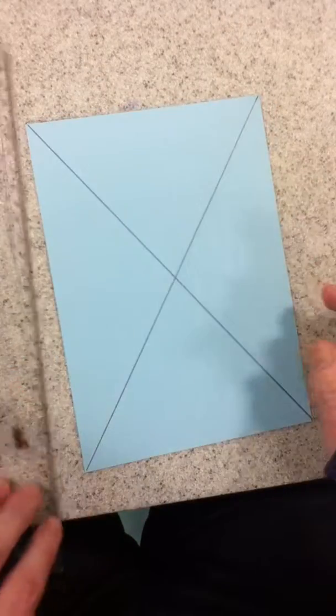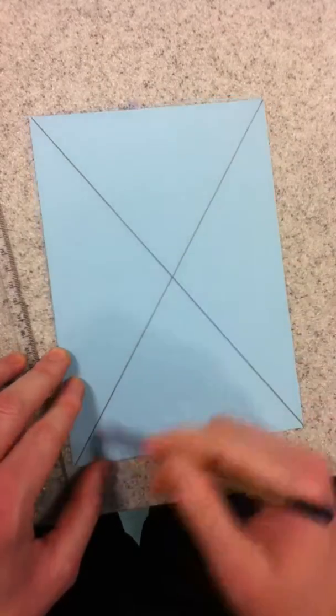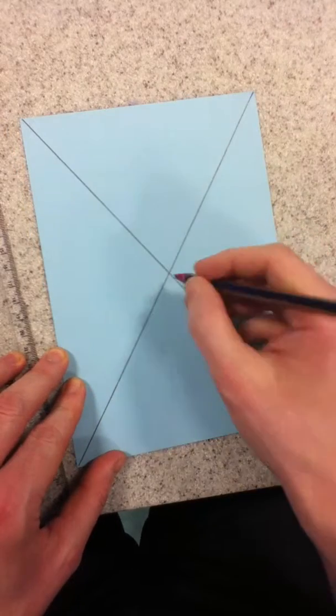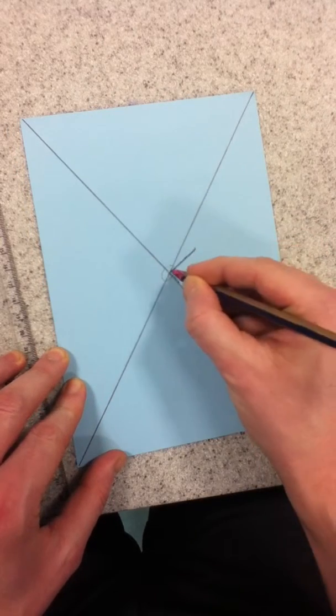And with a regularly shaped object, like a rectangle or a triangle, where those lines meet is the centre of mass.